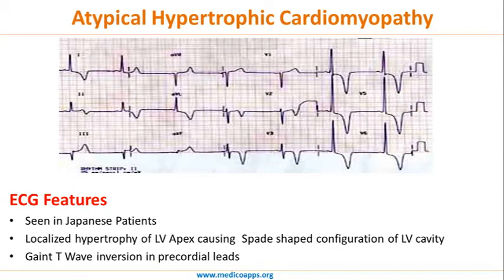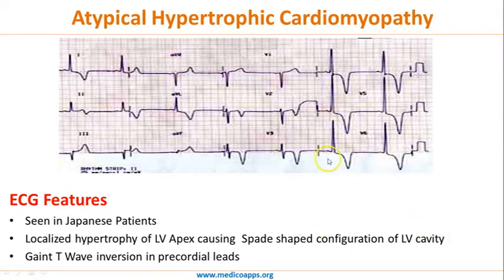There is another form — atypical hypertrophic cardiomyopathy. This is typically seen in Japanese patients, and they have a localized hypertrophy of the left apex causing a spade-shaped configuration of the left ventricular cavity. The ECG finding you will see is giant T wave inversion in all the precordial leads.